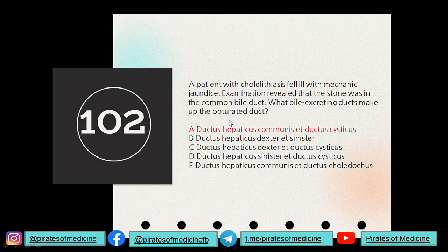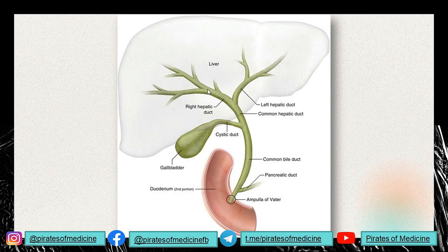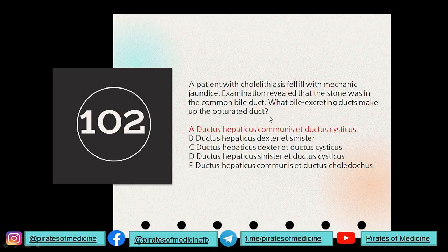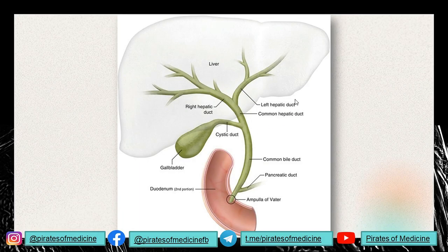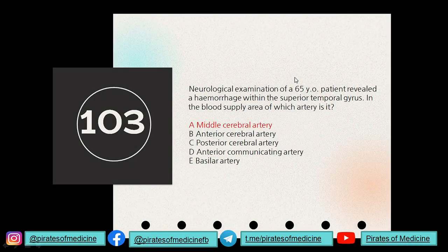Question 102: a patient with cholelithiasis developed mechanical (obstructive) jaundice; the stone was in the common bile duct. What bile-excreting ducts make up this obstructed duct? The right and left hepatic ducts combine to form the common hepatic duct. The cystic duct from the gallbladder joins the common hepatic duct to form the common bile duct, which then combines with the pancreatic duct and opens into the ampulla. The answer: the common hepatic duct (ductus hepaticus communis) and the cystic duct (ductus cysticus).